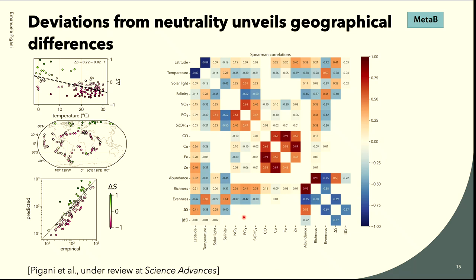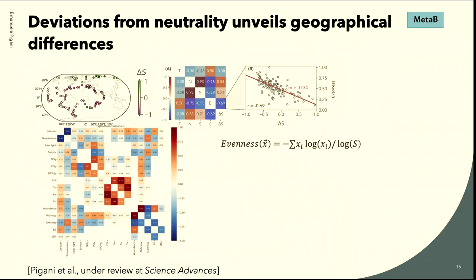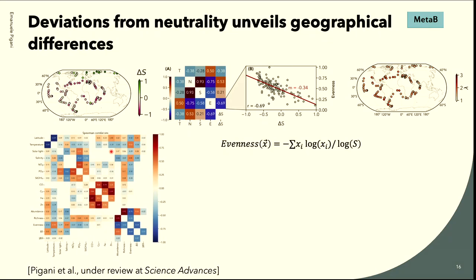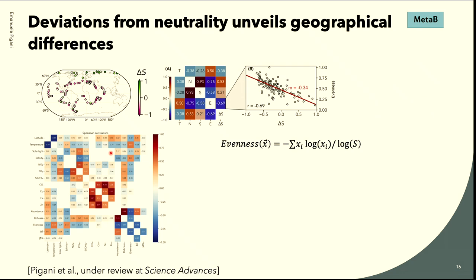Audience question: Did you try to disentangle whether it's temperature or latitude? We used random forest to understand which were the most important ingredients, and usually it is temperature. The strange thing is that when we look at the highest correlations, the highest one is not with one of these properties, but it is with the evenness, which is a measure of the Shannon entropy — something not directly related to temperature or salinity.